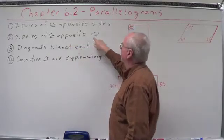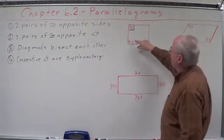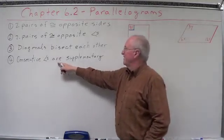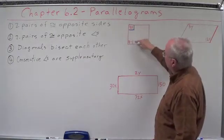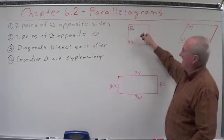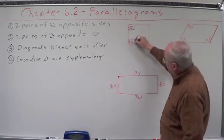Well, this one also has to be a right angle. Why? Because consecutive angles are supplementary. Well, if this is 90 degrees and this is supplementary to that, 180 minus 90, this has to be a right angle.